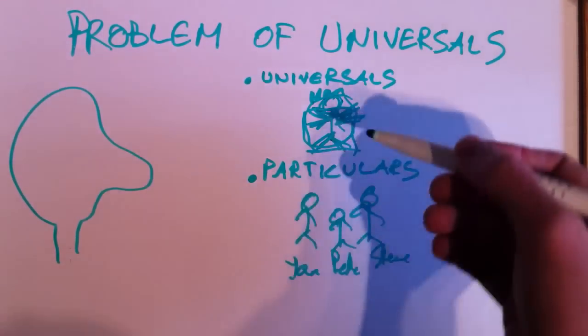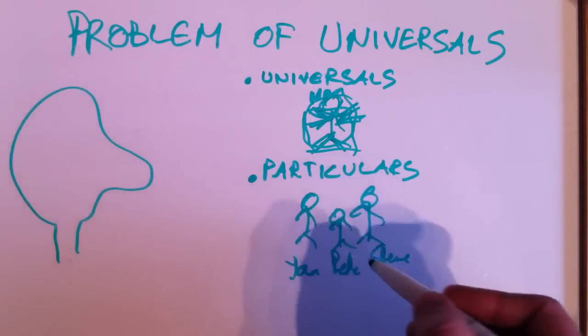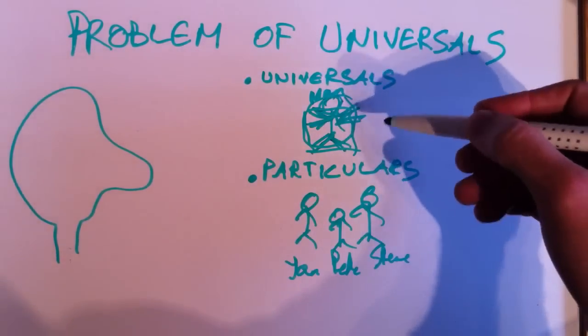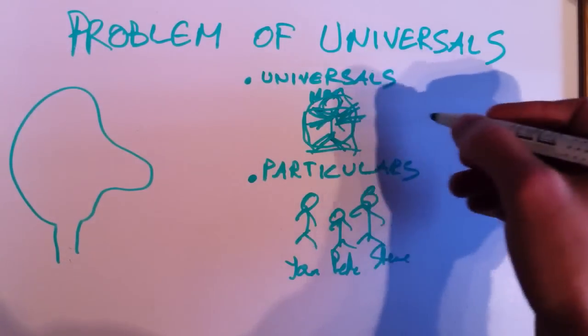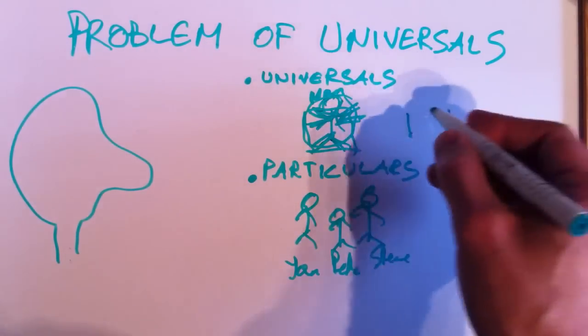In distinction from Jan, he looks a bit different, and Pete looks a bit different. So you have all these different specific individuals as particulars, while man in general is a universal. Or you could say the same about anything. Tables, for instance. You have the universal table.